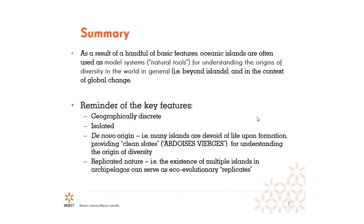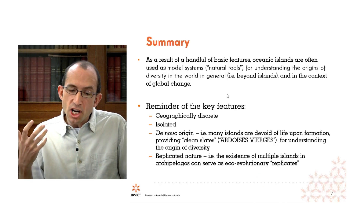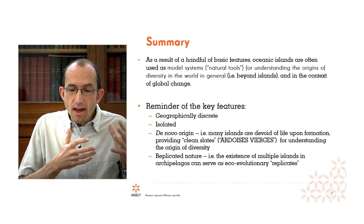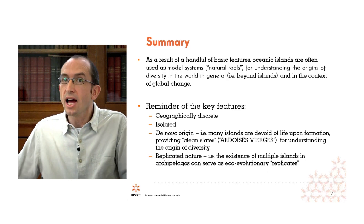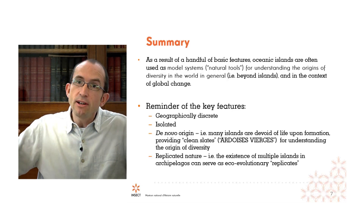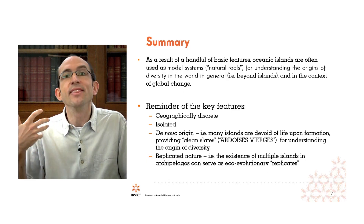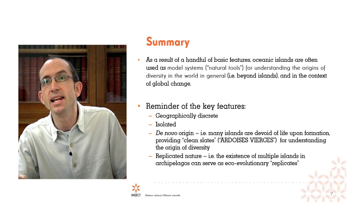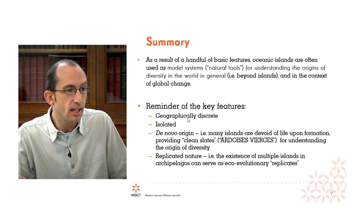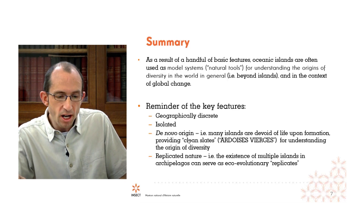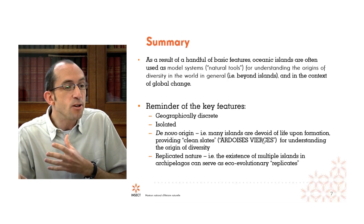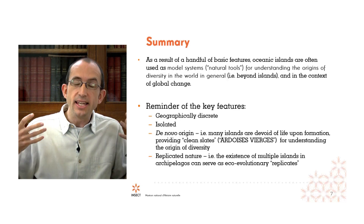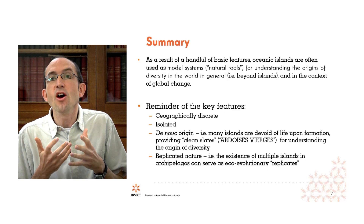In summary, as a result of a handful of basic features, oceanic islands are often used as model systems — natural tools — for understanding the origins of diversity in the world in general. Even though we're studying islands, the implications go far beyond them, implicating evolution and ecology worldwide, also in the context of global change. The key features are that islands are geographically discrete, isolated, often have de novo origins forming devoid of life — what we call clean slates — and that multiple islands can serve as eco-evolutionary replicates.